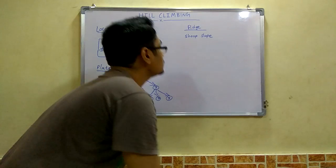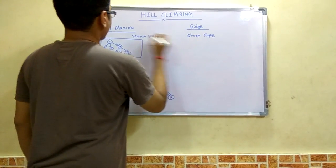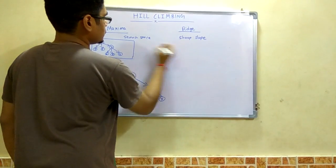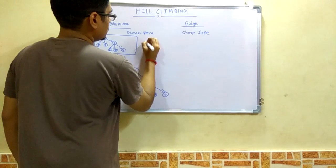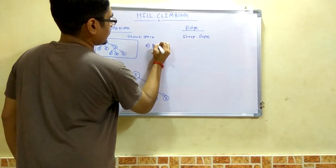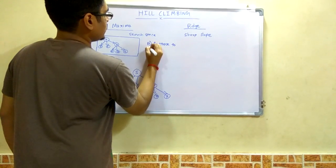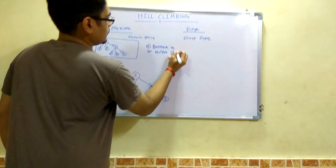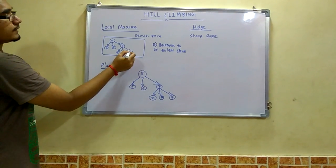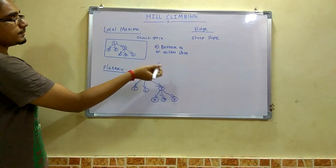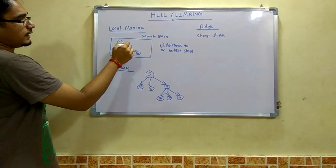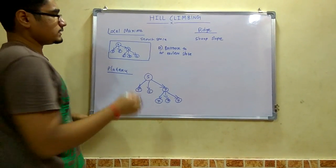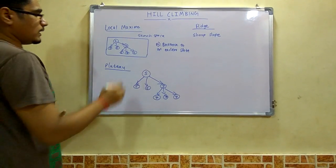We can tackle these problems. These problems can be tackled by, if there's local maxima, we can backtrack to an earlier state. With this, we can backtrack like if 4 is reached and has no further successors, we can backtrack to 7, and from 7 to the current state, and choose which path to search. This is the solution for local maxima.